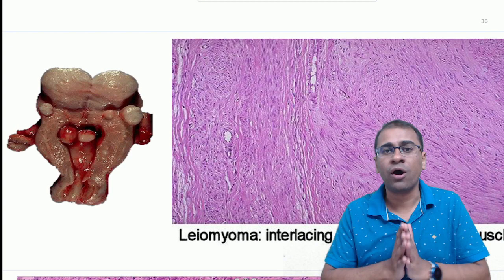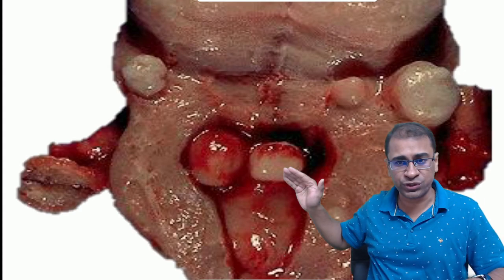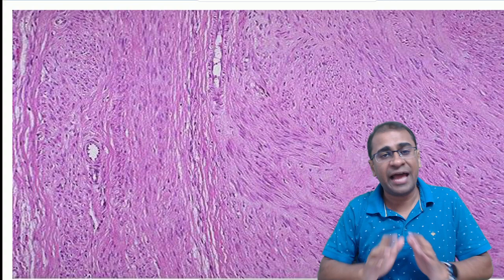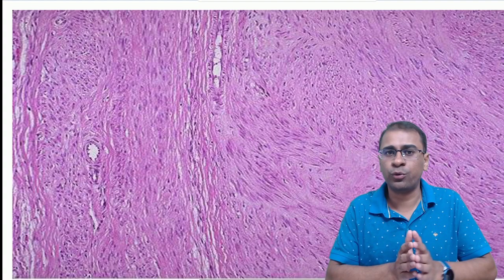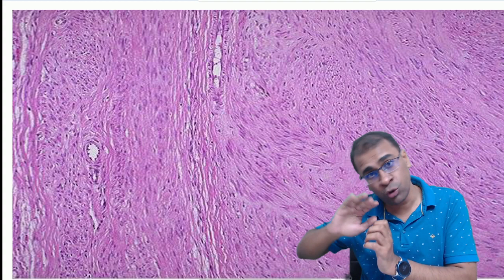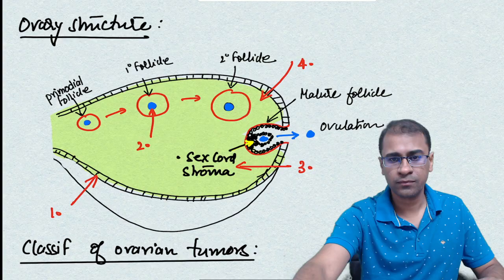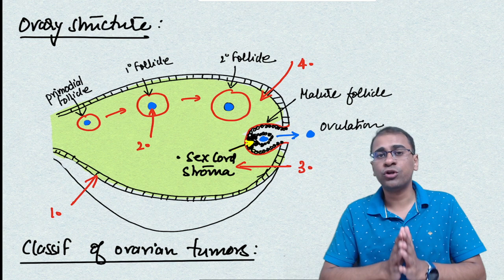Talking about tumors of the myometrium, the most common tumor of the reproductive age group is called myoma or fibroids. A fibroid can be intramural, submucosal, or subserosal. On microscopy it shows whorls of cells and the cells are seen as spindle-shaped cells. This is called uterine myoma, also called fibroids. If it has a mitosis rate of more than 10 per 10 high-power fields, it is often referred to as leiomyosarcoma. Leiomyosarcoma often arises de novo and a fibroid does not usually proceed to cause a leiomyosarcoma.